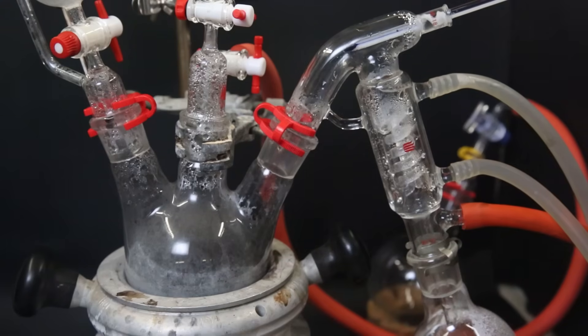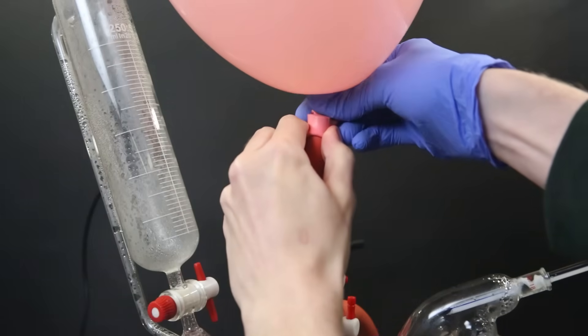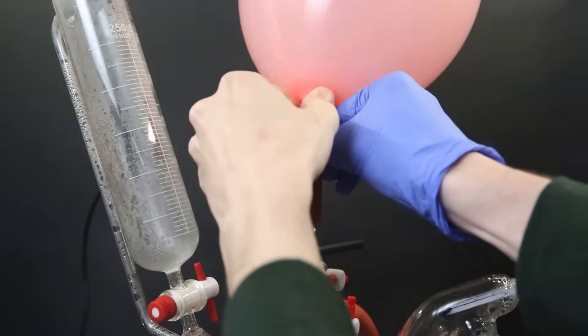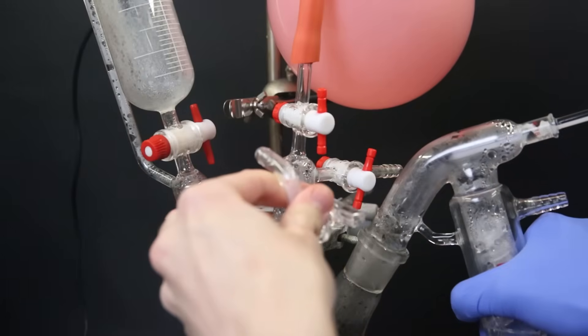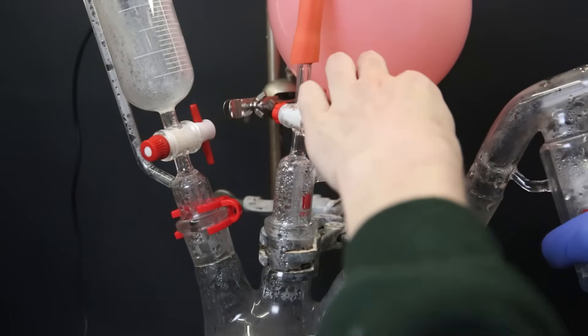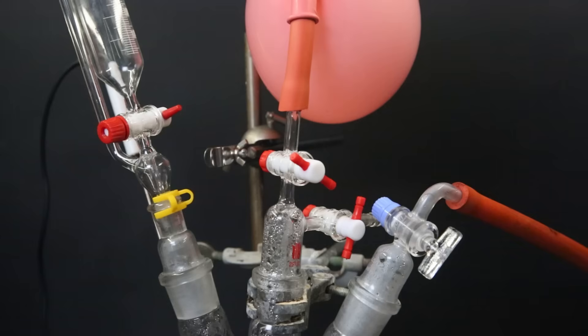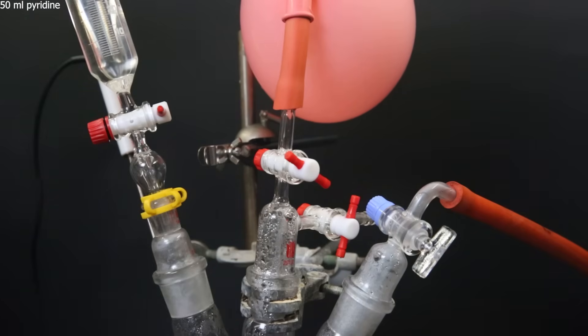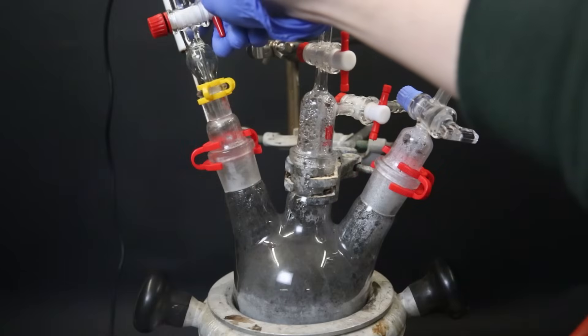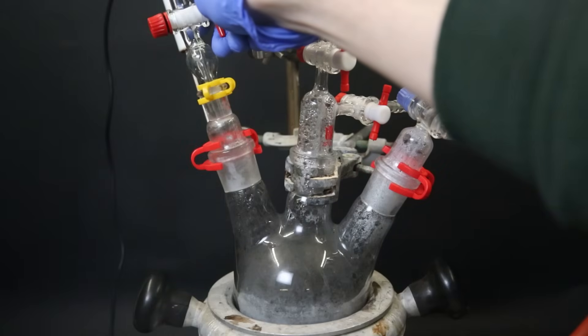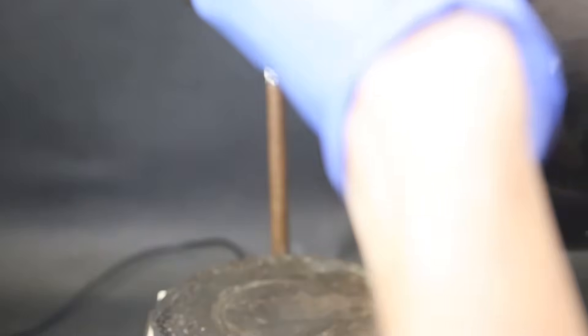When pretty much all of the water is gone, I attach an argon balloon to the middle adapter so that the nickel does not come in contact with the air. I then remove the distillation setup and replace the dropping funnel for a smaller one. Now I add 50 ml of pyridine into the dropping funnel and slowly drip it into the flask. I then remove the heating mantle and start shaking the flask so that the pyridine starts covering all of the nickel.